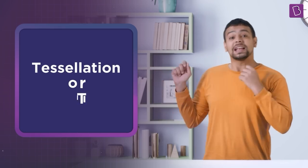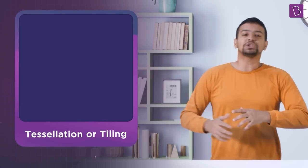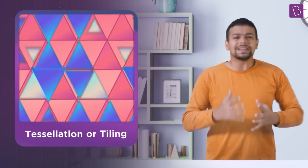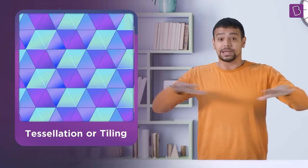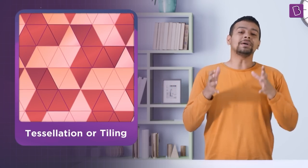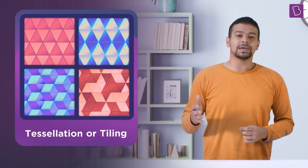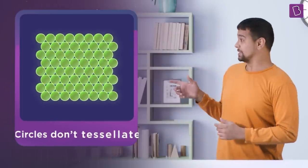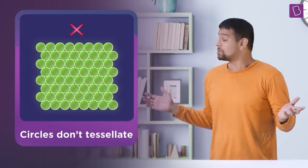Tessellation, or tiling. Now when shapes are arranged in a repeating manner without leaving gaps on a plane, they make a tessellation. In other words, we can say that circles actually don't tessellate.